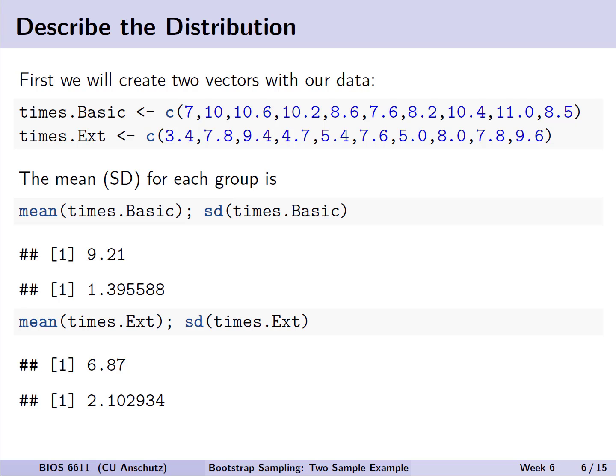So in this case, because we just have two small vectors of data, we'll just manually enter our data as times.basic and times.ext. Then we can calculate the mean and the standard deviation for each group, noting that, on average, basic cable during our sampling period had 9.21 minutes of commercials,